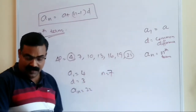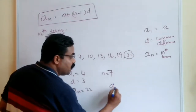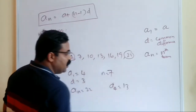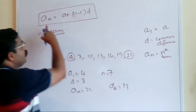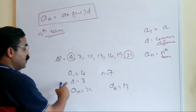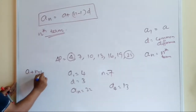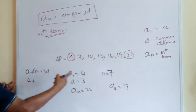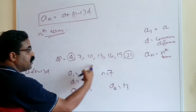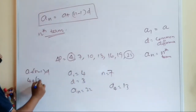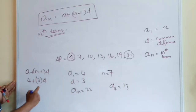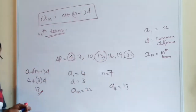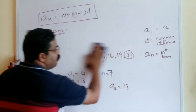If I ask what is a₄ — the fourth term — I use the formula: aₙ = a + (n−1) × d. For the fourth term, n = 4: a₄ = 4 + (4−1) × 3 = 4 + 9 = 13. So the fourth term is 13. This is how you find the nth term using the formula.